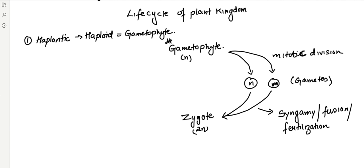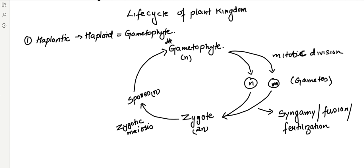So what does this zygote need to do? It needs to undergo meiosis to be converted back into the haploid structure. So we'll have meiosis here. Since this meiosis is taking place in the zygote, this kind of meiosis is known as zygotic meiosis, which leads to the formation of spores. These spores then germinate into the gametophyte.